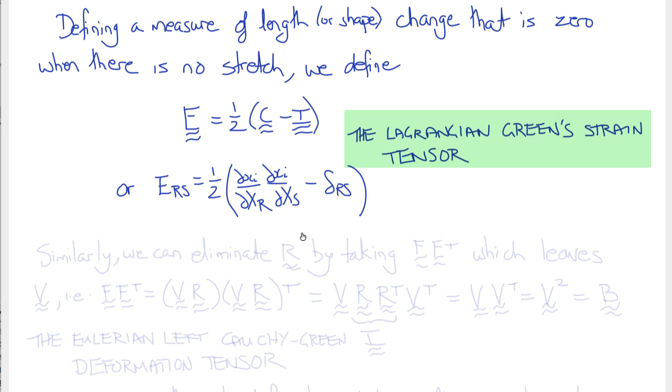Namely, length changes in two or three dimensions involve the square root of sums of squares. In order to eliminate rotation, we took F transpose F. That had the effect of squaring U, and therefore the strain defined this way has a quadratic definition. The one-half is so that when we do a Taylor series expansion and linearize, it will cancel.